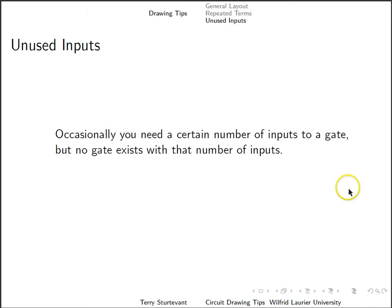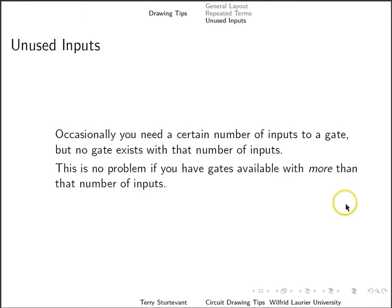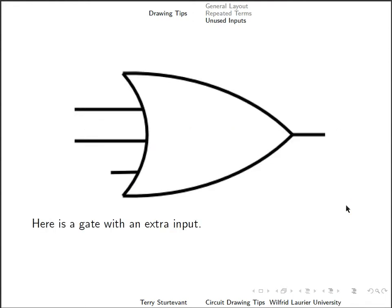Occasionally, you'll need a certain number of inputs to a gate, but there isn't a gate in the library with that number of inputs. This isn't a problem if there is a gate that has more than that number of inputs. So for instance, here is an OR gate with three inputs. Suppose you only need two.